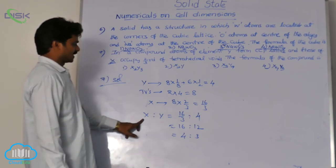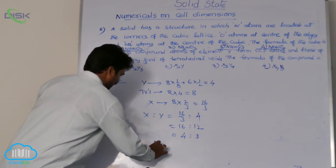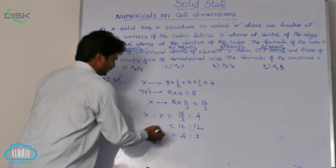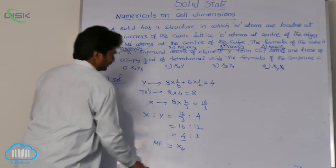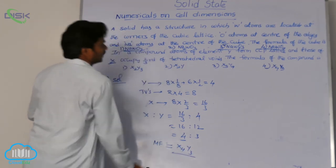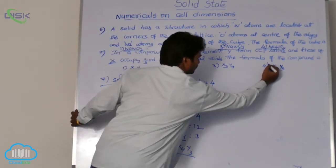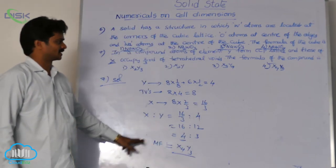So X atoms are 4, Y atoms are 3. What is the molecular formula of this compound? X atoms: 4, so X₄. Y atoms: 3, so Y₃. Therefore, the formula of the given compound is X₄Y₃, which is the 4th option.